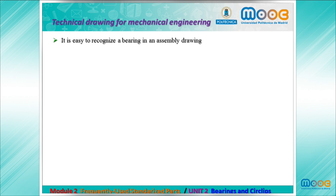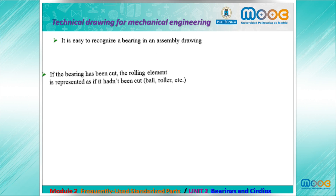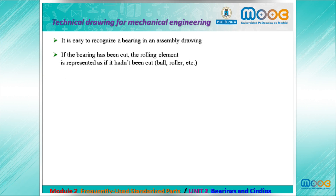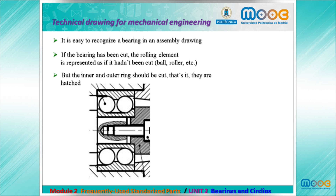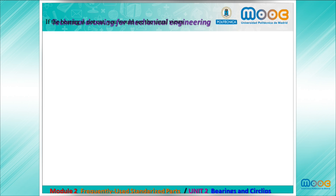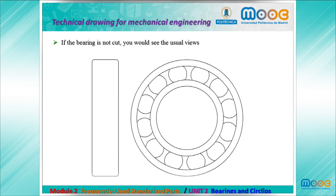It is easy to recognize a bearing in an assembly drawing. If the bearing has been cut, the rolling element is represented as if it hadn't been cut — the ball or the roller — but the inner and the outer ring should be cut, that is, they should be hatched. If the bearing is not cut, you would see it with the usual views.